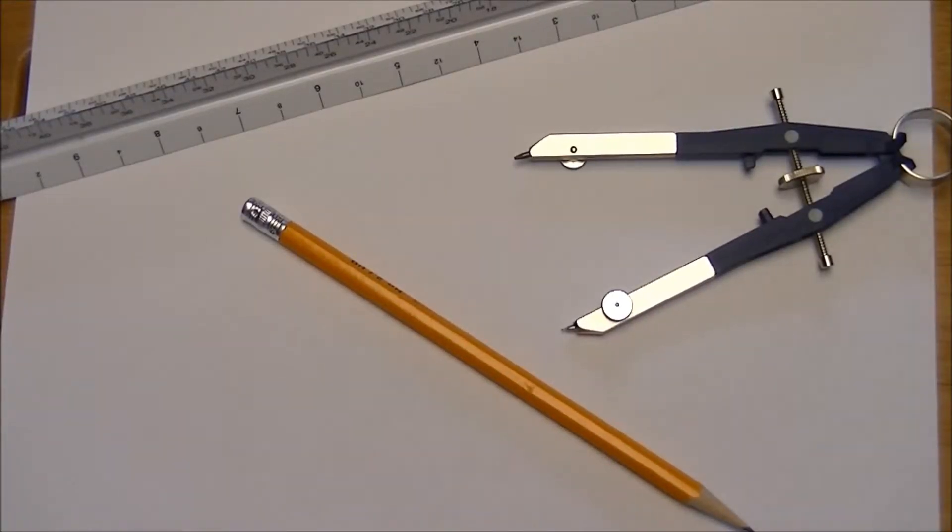In this lesson we're going to look at how to make a regular polygon, specifically a hexagon, using a straight edge, a compass, and a pencil.